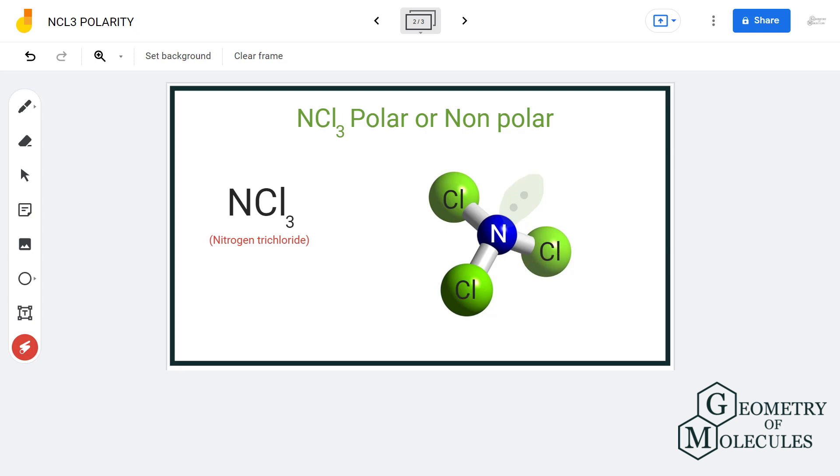Also, if there was no lone pair, then there would have been symmetry in the molecule. Already the dipole moment is zero in the bonds, but due to the shape of the molecule and repulsive force of the electron pair, there is a slight difference in distribution of electron density that induces polarity in the molecule, and so we can say that NCl3 is a polar molecule.